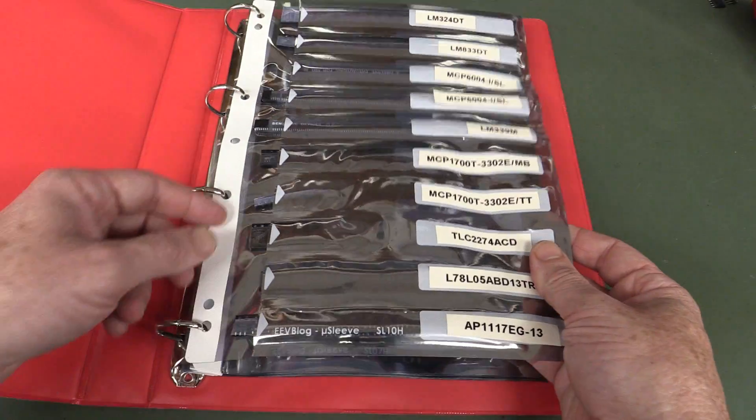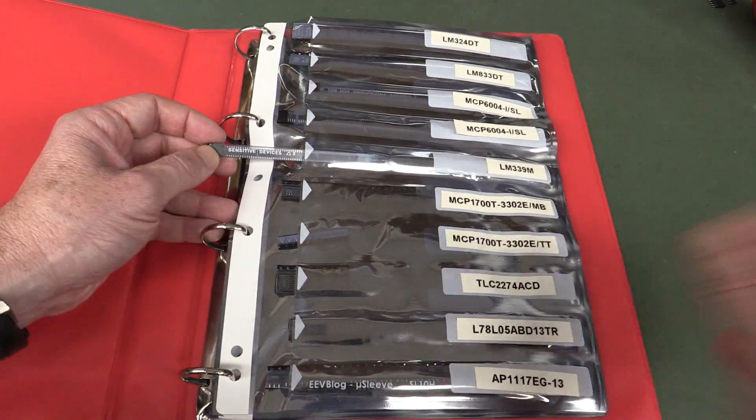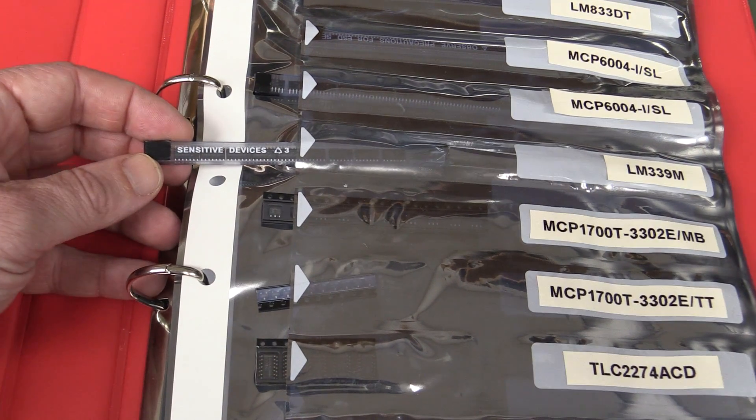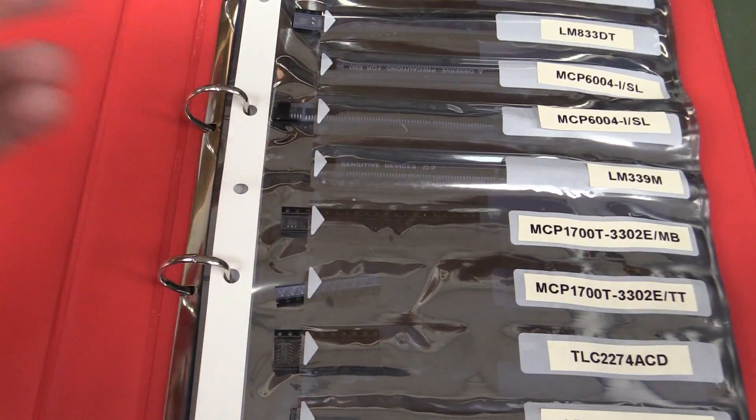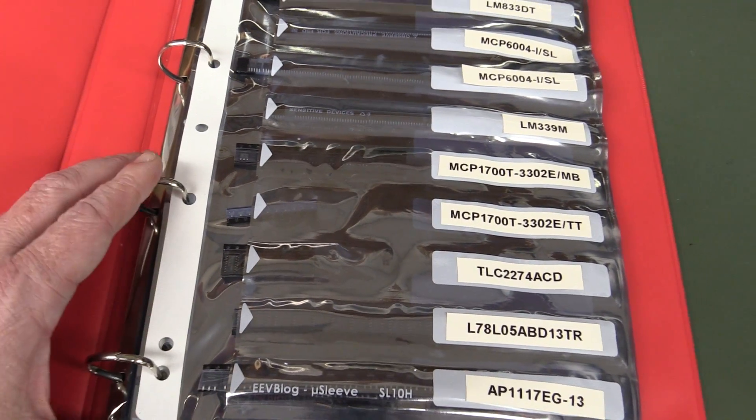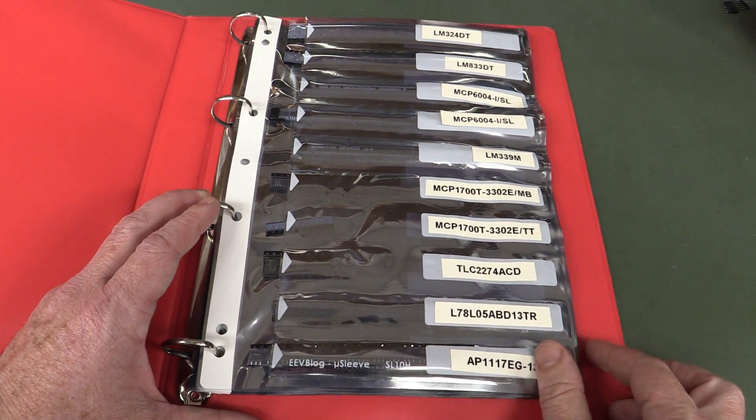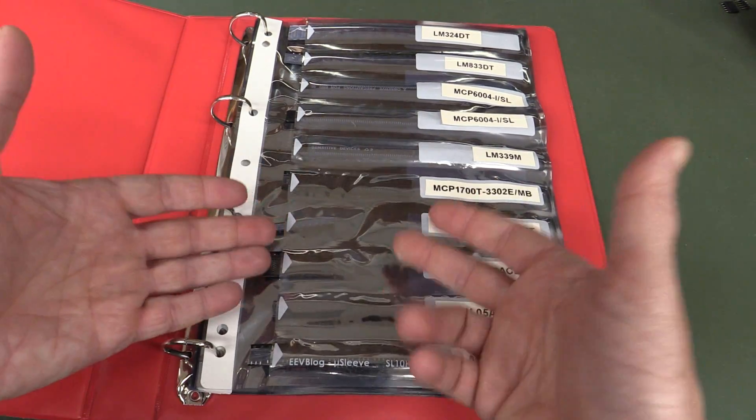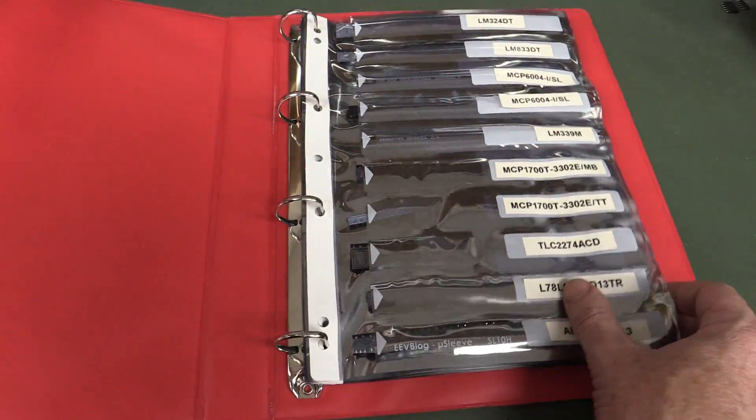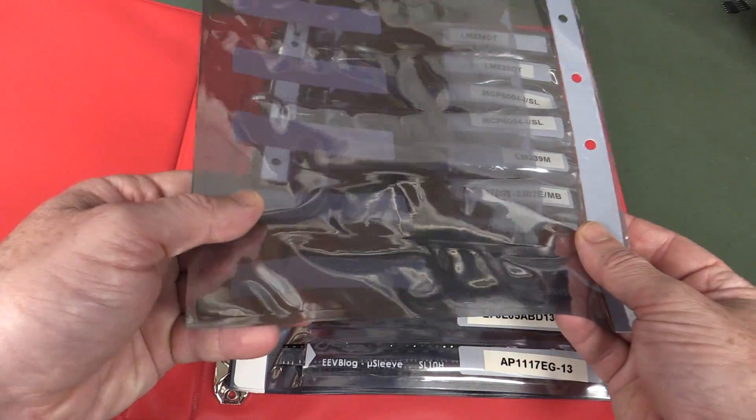And as you can see they also hold tubes as well, so you don't necessarily have to put tapes in there. You can put off-cut tubes or anything like that, they just slide in there like that. I think it's quite a neat solution, there wasn't anything on the market like it and I wanted to store my SMD parts like this in a proper static shielding.